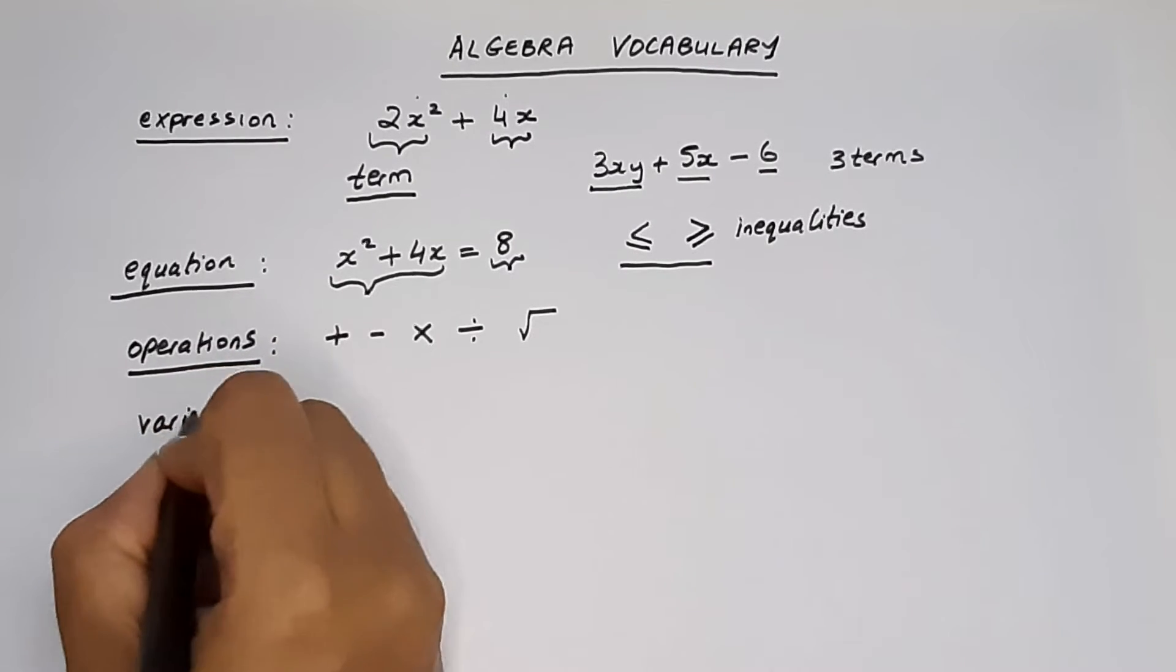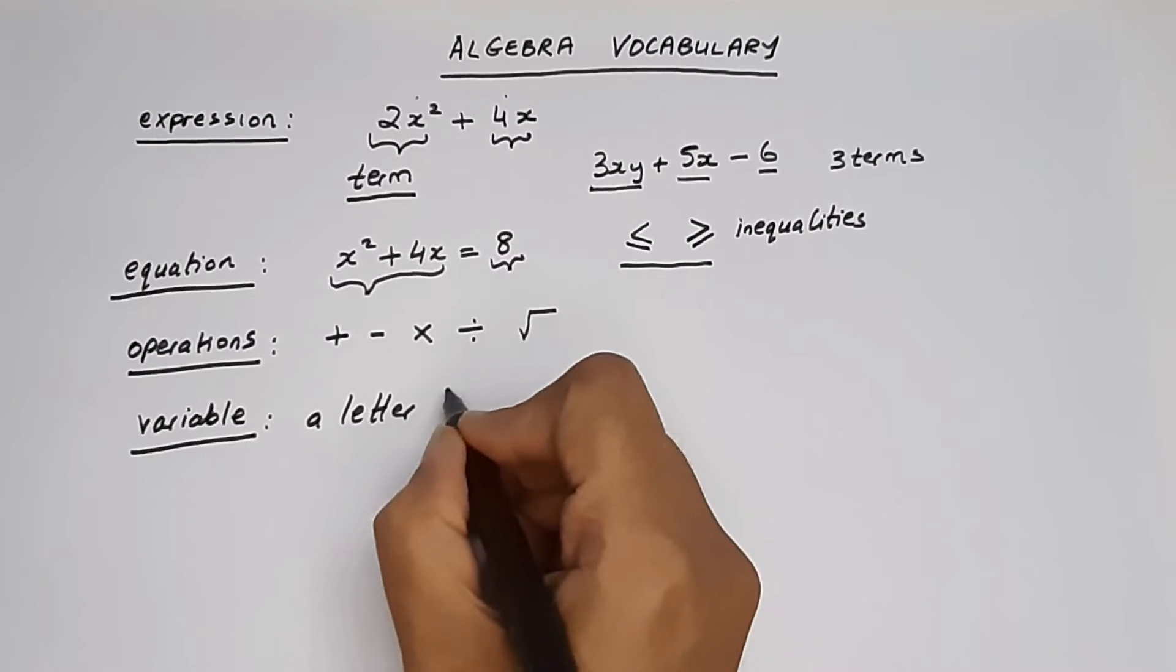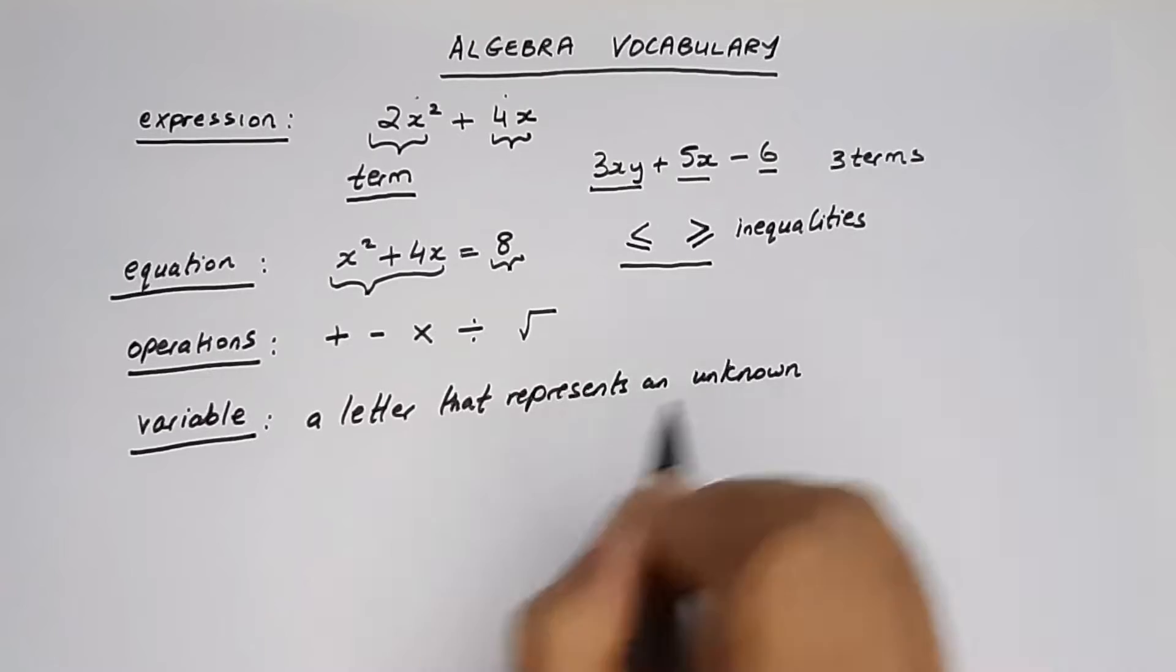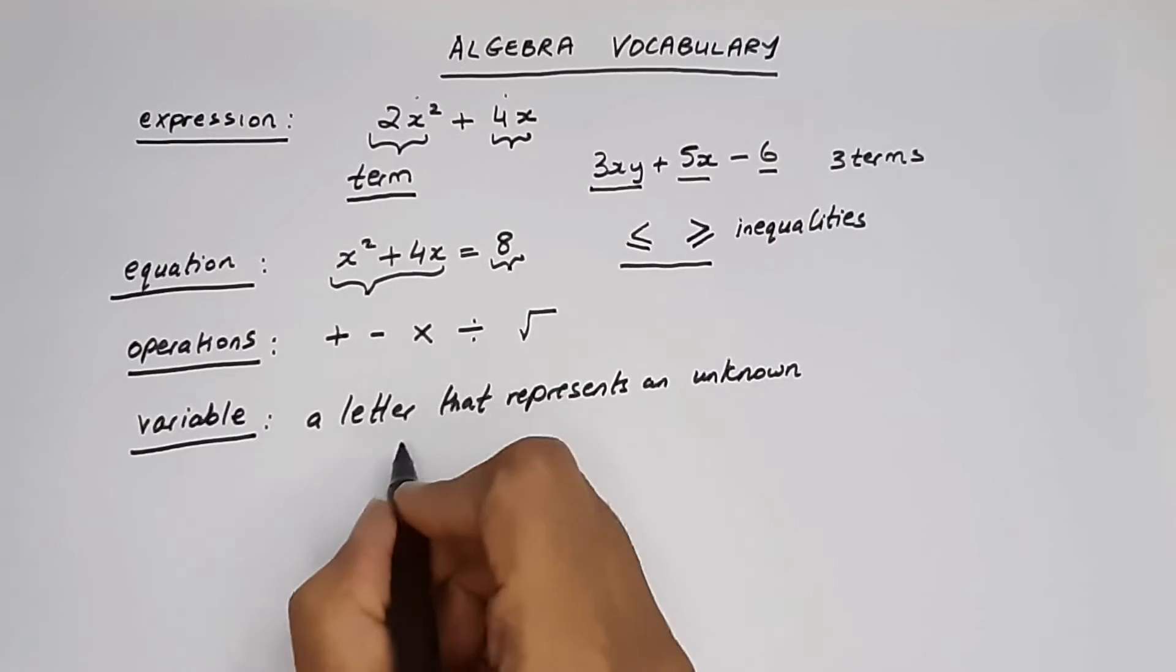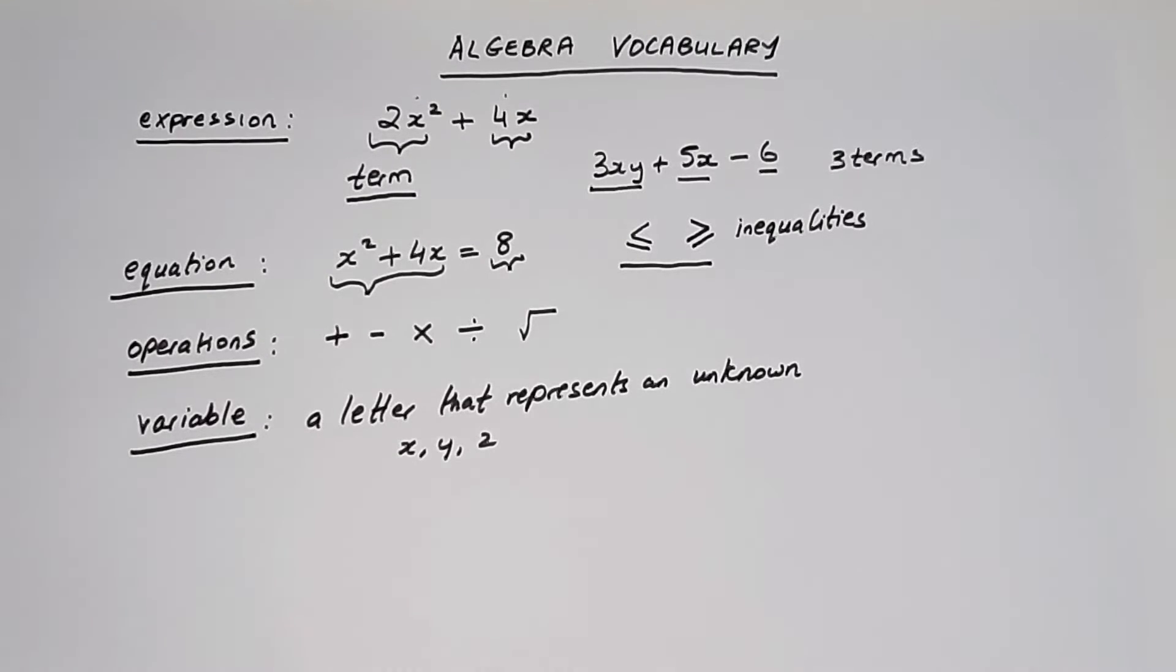The word variable is basically just a letter that represents an unknown which is usually a number. And mathematicians love to use x, y, z, the lowercase and the last letters of the alphabet. They love to use those as variables.